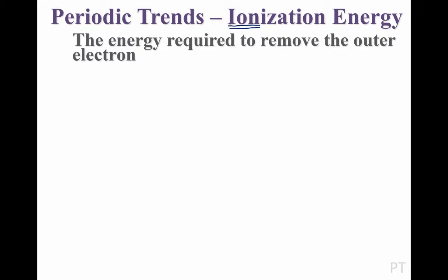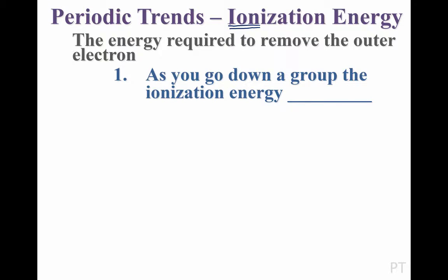When talking about periodic trends, we're looking for patterns on the periodic table that allow us to predict properties of an element. So let's begin with a pattern you'd observe as you go down a group on the periodic table. Remember, a group is a vertical column on the table.